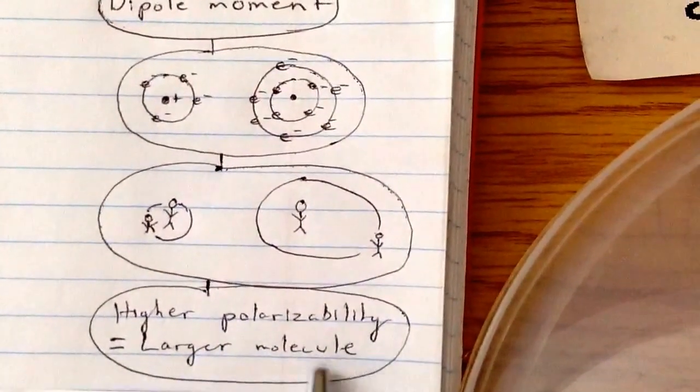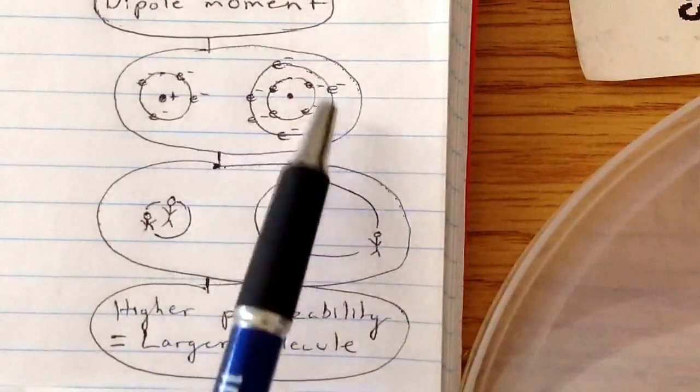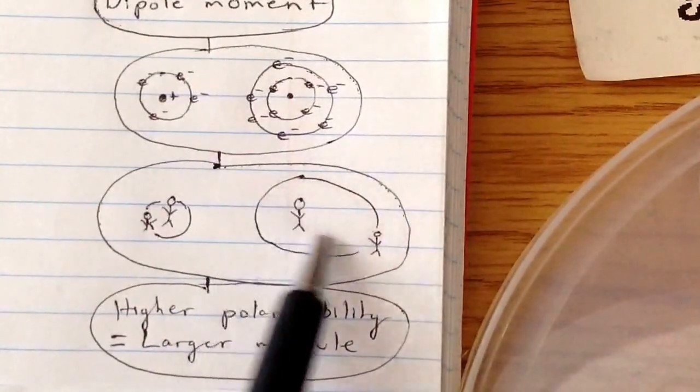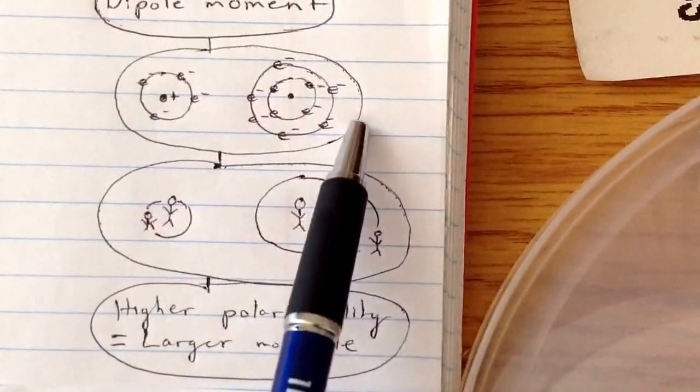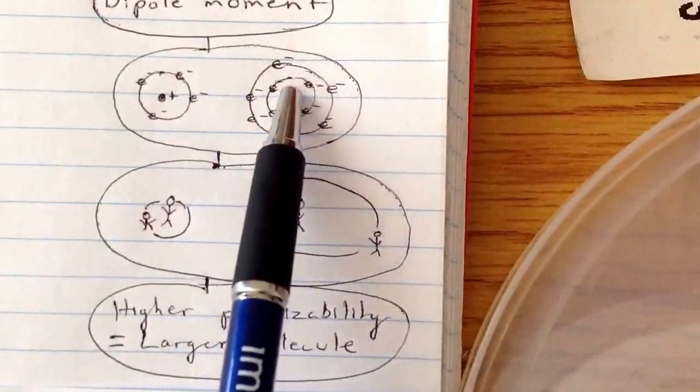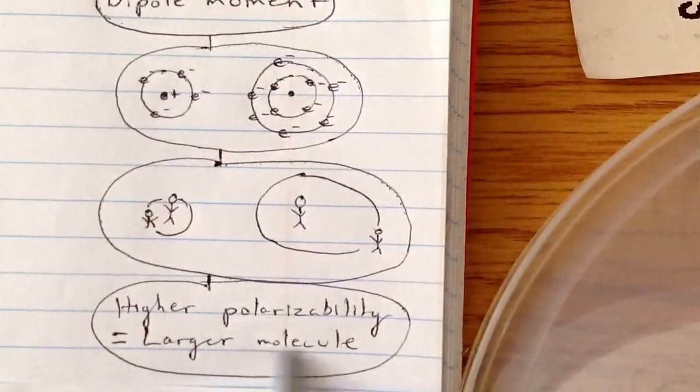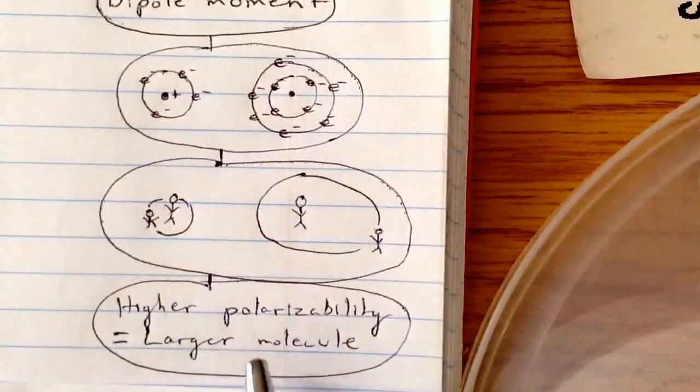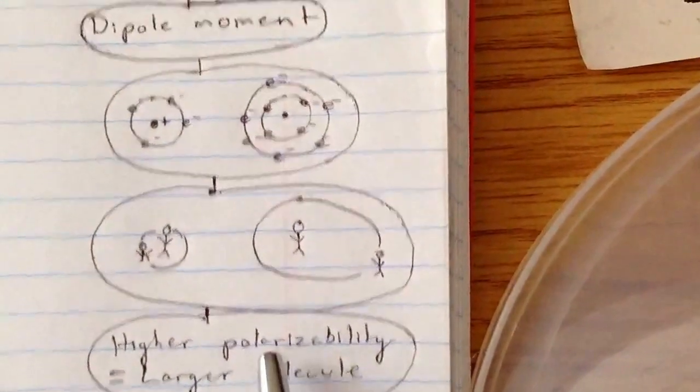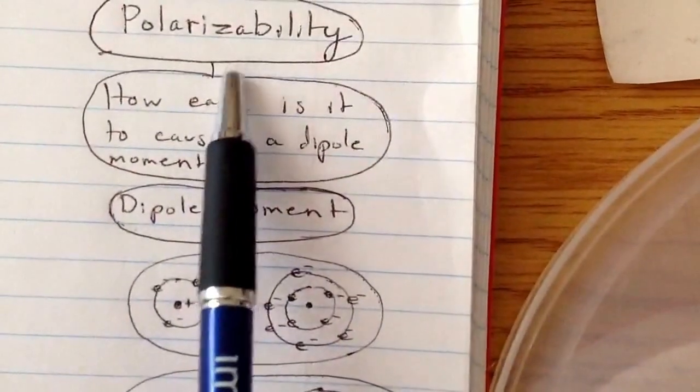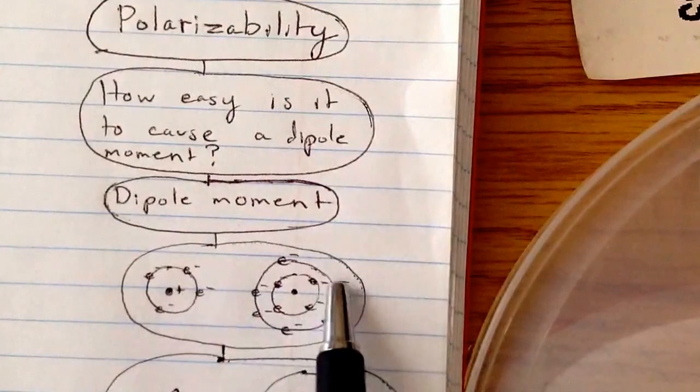So higher polarizability equals a larger molecule. That makes sense because for there to be a lot of space, there has to be a lot of electrons. If there's a lot of electrons, there's a lot of protons and neutrons. And the more protons and neutrons, the larger the molecule and the larger the molar mass. So a general trend for polarizability is the larger the molar mass, the greater the dispersion force is.